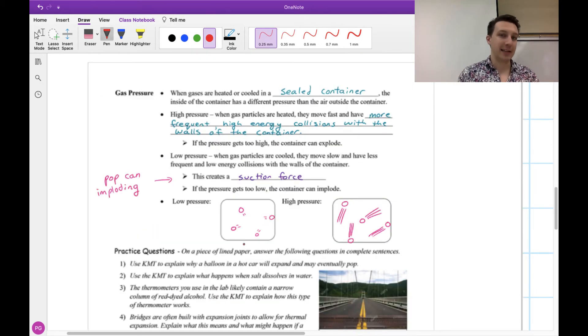This is also related to gas pressure. When gases are heated or cooled in a sealed container, the inside of the container can have a different pressure than the outside. This is true not even just for heating and cooling, but also if you have a pressurized container. Like if you've ever seen spray bottles, those are pressurized. If it has high pressure, that means the gas particles are heated and moving faster and they have more frequent high energy collisions with the walls of the container.